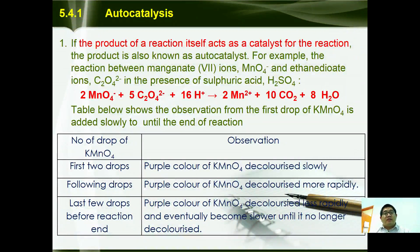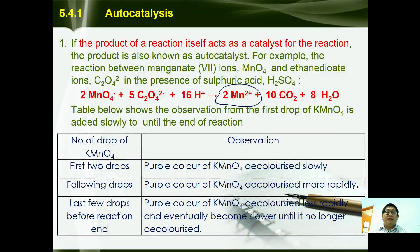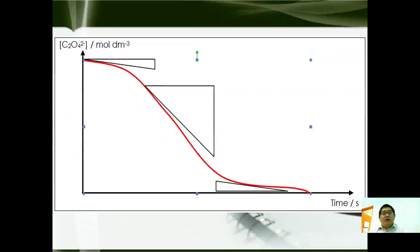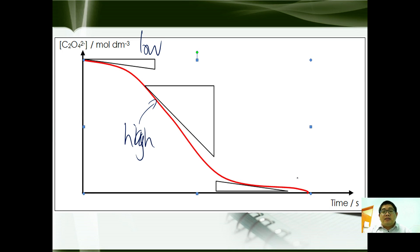Last but not least, we also have what is called autocatalysis. If the product of the reaction acts as a catalyst itself, it is also known as an autocatalyst. For example, in the reaction between manganese ions and tin(II) ions, Mn²⁺ becomes a catalyst of the reaction, hence increasing the rate of reaction. In the titration experiment with KMnO₄, the first two drops decolorize slowly, then the following drops decolorize more rapidly, and towards the end it decolorizes slowly again. The graph of autocatalysis shows an initially low rate of reaction; in the middle, when the catalyst builds up, the rate becomes higher; and towards the end, as the concentration of reactants decreases, the rate lowers again.